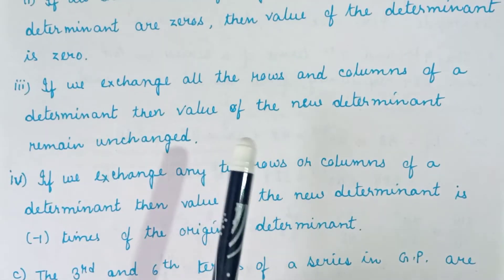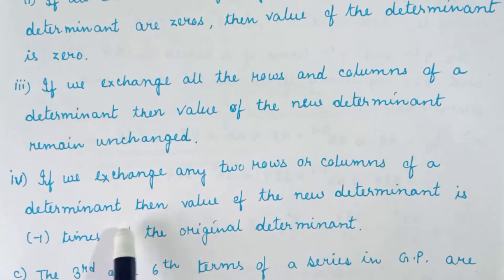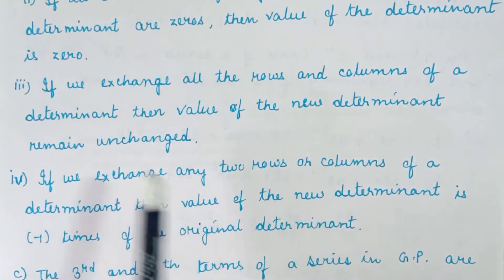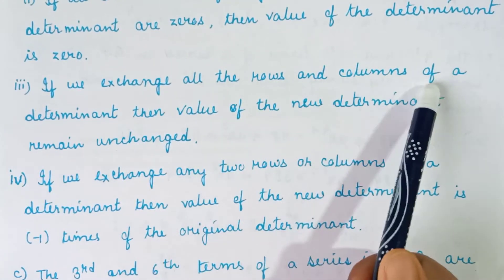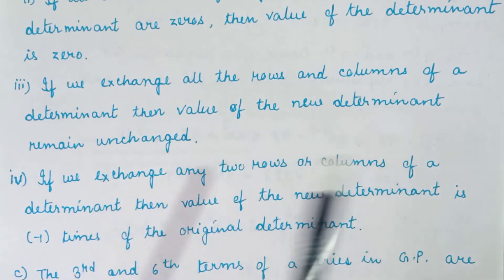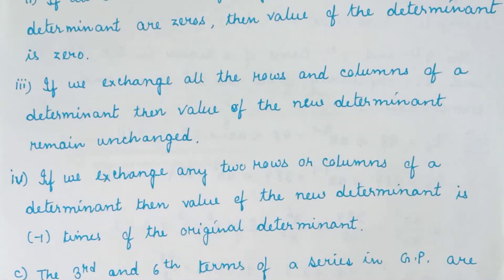If we exchange two rows and columns of a determinant, then the value of the new determinant is minus one times the original determinant. Then if we exchange any two rows and columns, the value of the new determinant remains unchanged. So these are the properties — you can write down any two from these. There are also other properties if you want to go for those.